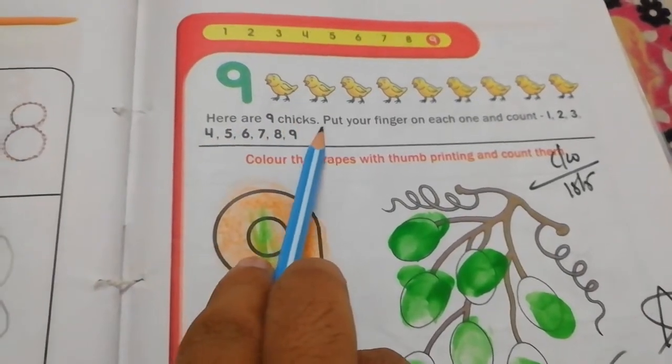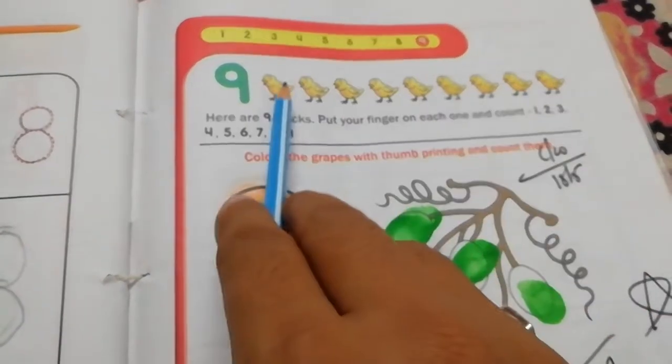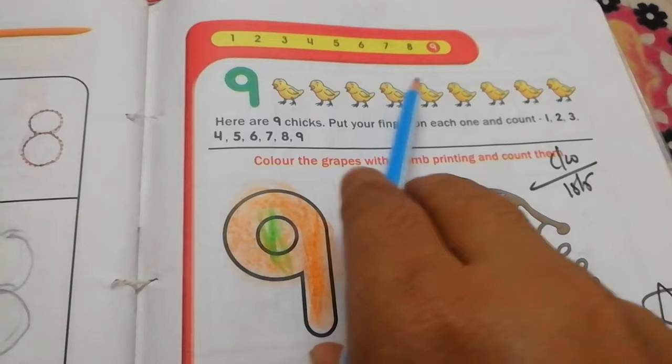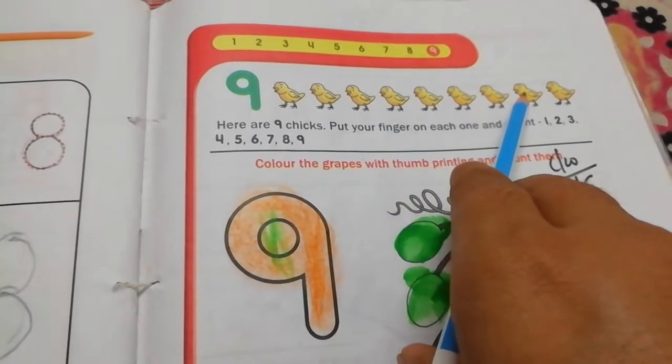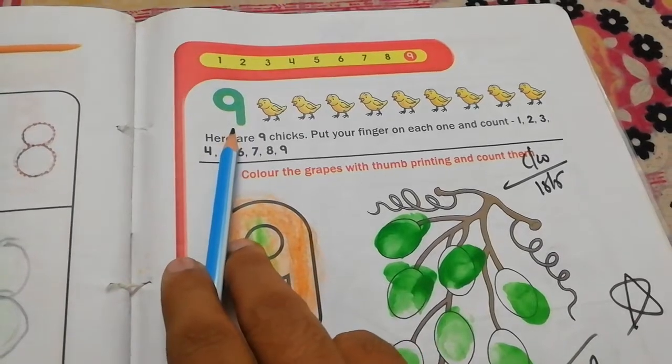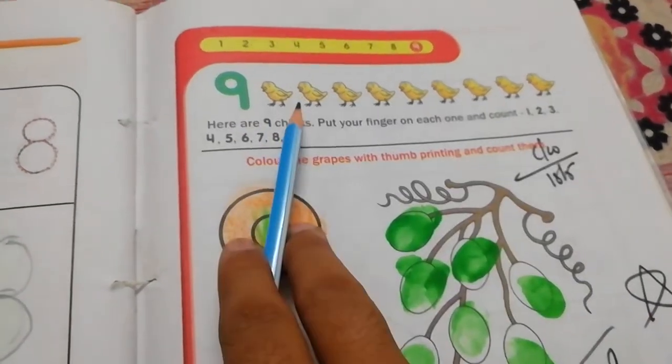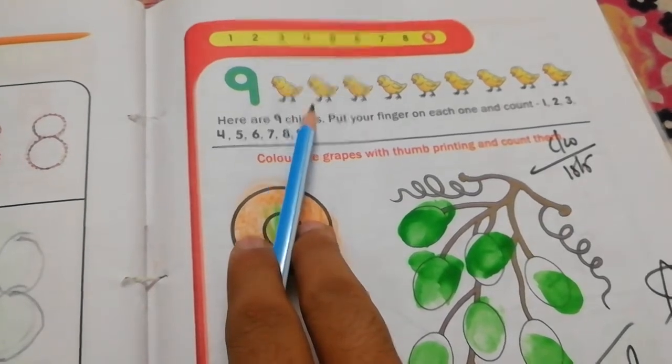Here are 9 chicks. Put your finger on each one and count. 1, 2, 3, 4, 5, 6, 7, 8, 9. There are number 9. There are 9 chicks here. How many chicks are there? This is 9 chicks are there.